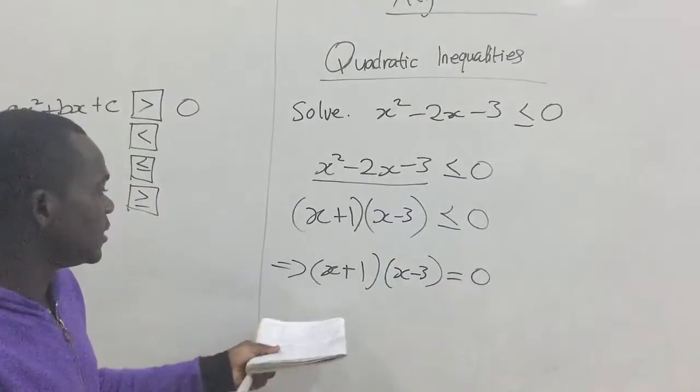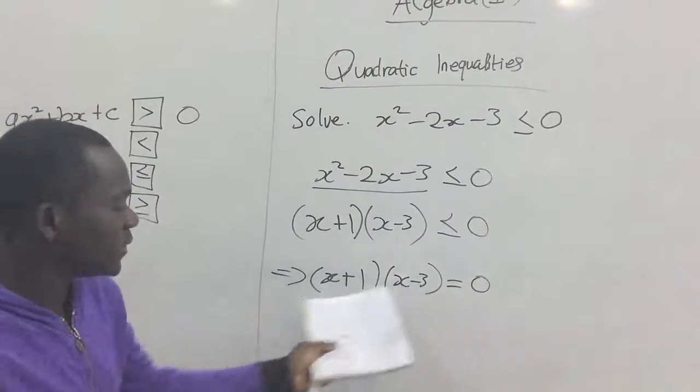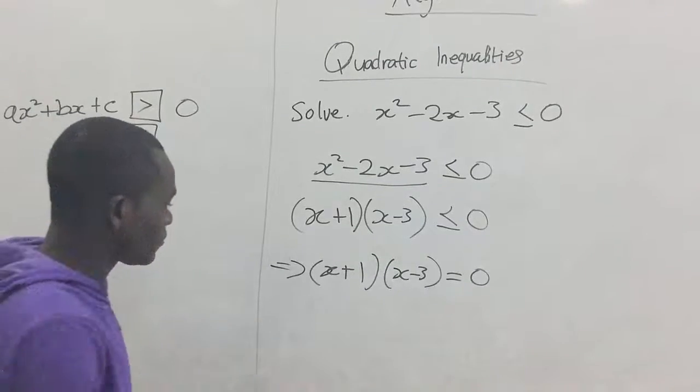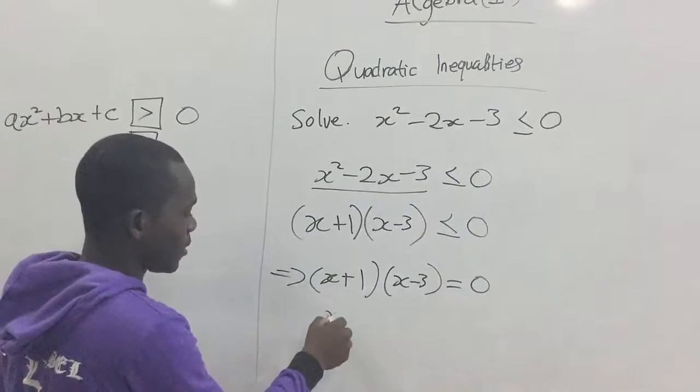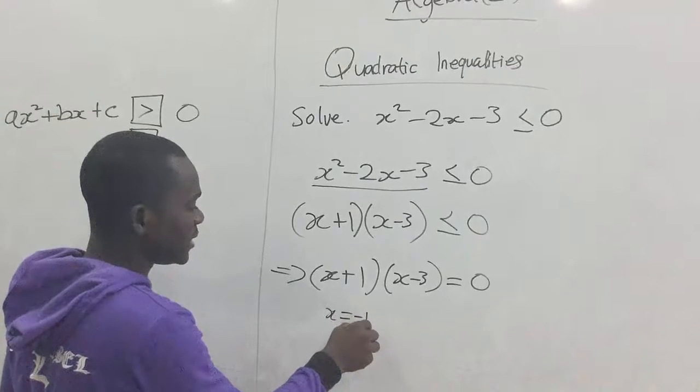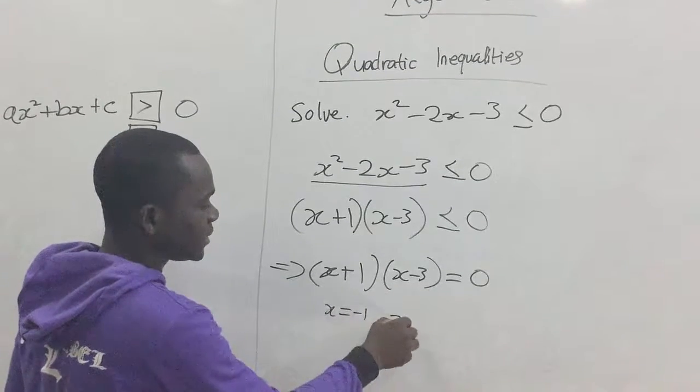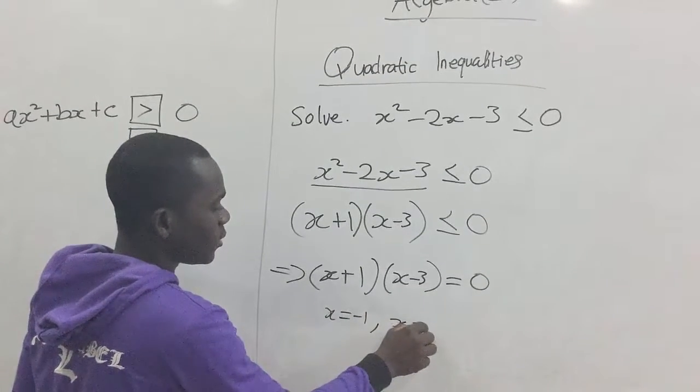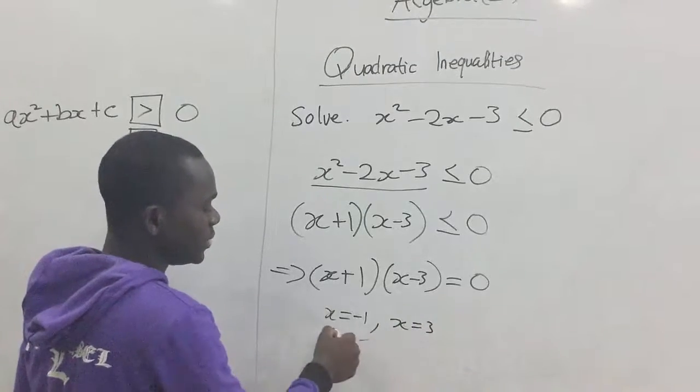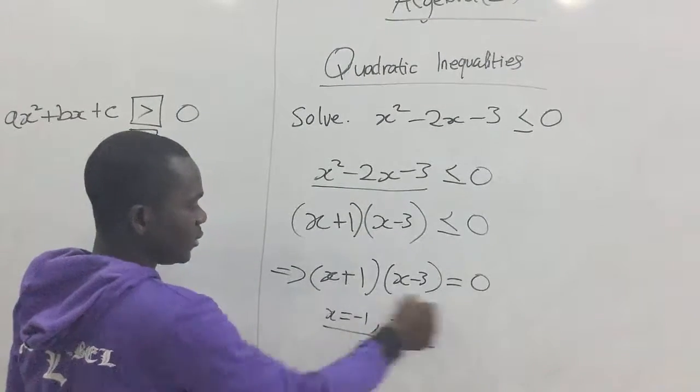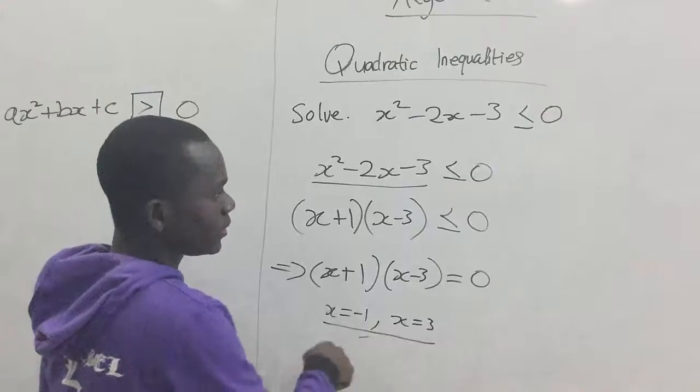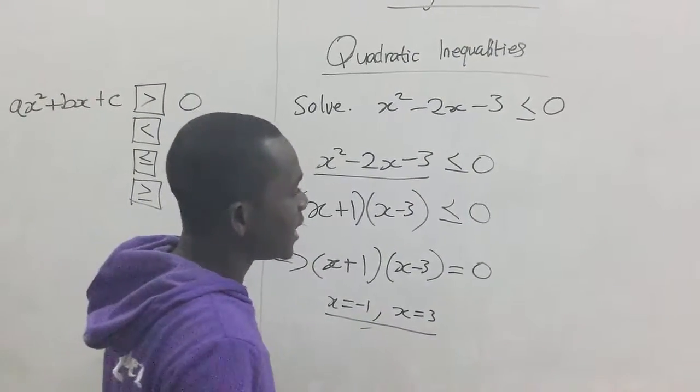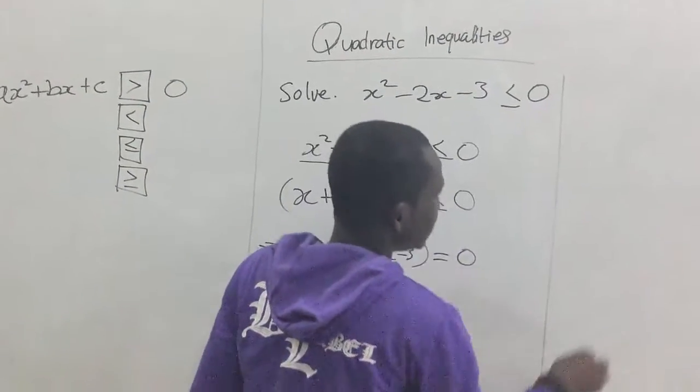So, let's see, the root of this expression will be x equals negative 1, and x equals positive 3. So, this will be the roots of this equation here. So, we are going to plot the graph for this equation. And definitely, our graph will look something like this.